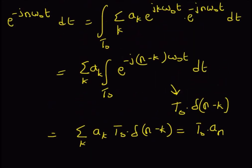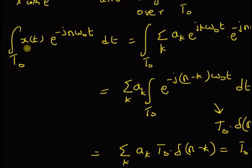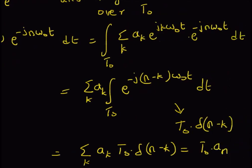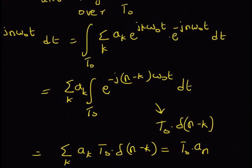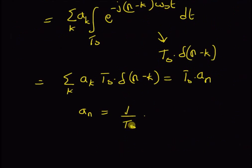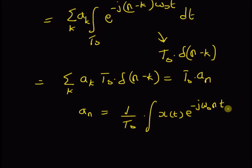Now, by looking at the left hand side of this equation — that is, integral of x(t) e^(-jnω₀t) dt — this should be equal to T₀ · aₙ. So the Fourier coefficients aₙ are clearly equal to (1/T₀) multiplied by this integral, that is, aₙ = (1/T₀) ∫ x(t) e^(-jnω₀t) dt.